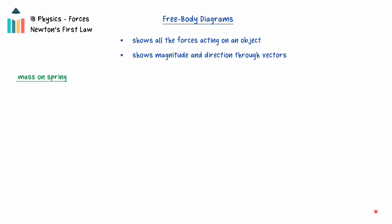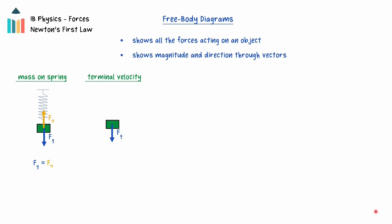First, let's consider an object that is at rest suspended from a spring. The gravitational force will be acting downwards on the object and the spring will be exerting an upwards force. Because the object is in equilibrium, these forces can be drawn with equal magnitudes, so the arrows will be of equal length. If the spring is then removed, the object will begin to fall. After a period of time, the object will be falling at its terminal velocity, so an upward force of air resistance will be acting, which would have the same magnitude as the force of gravity, so the two vectors would be drawn with the same length.